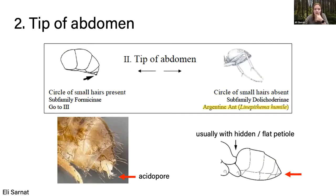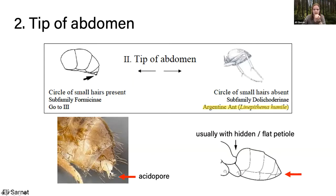The second step is the tip of the abdomen. For ants with a single node, the tip of the abdomen might have a circle of small hairs — or no circle at all. This circle of hairs is called the acidopore. The subfamily Formicinae has this acidopore: a very obvious circular anus with a starburst of hairs around it that helps spray formic acid. Ants with a hidden flat petiole will often have no acidopore whatsoever — just smooth cuticle around the abdomen.